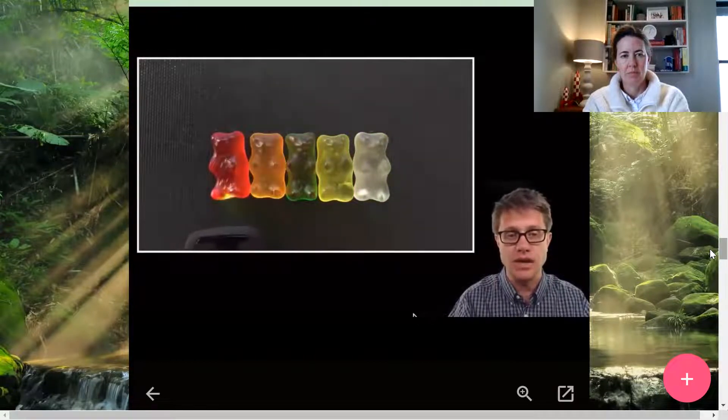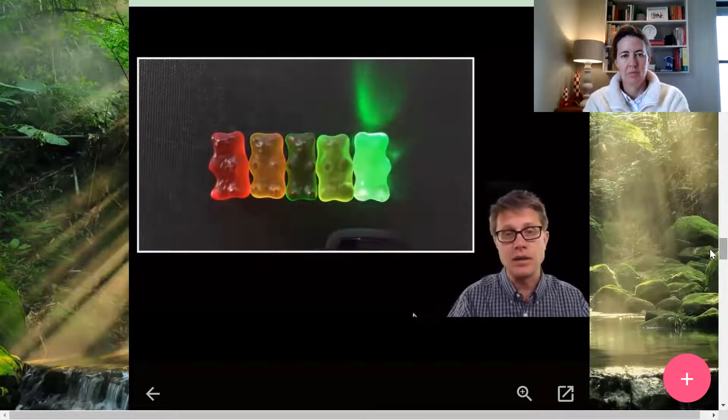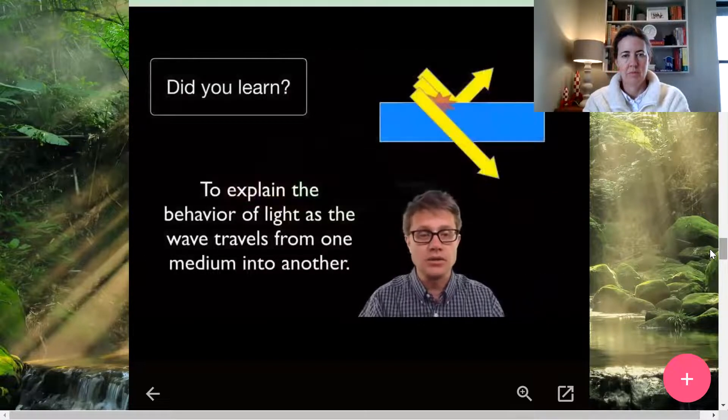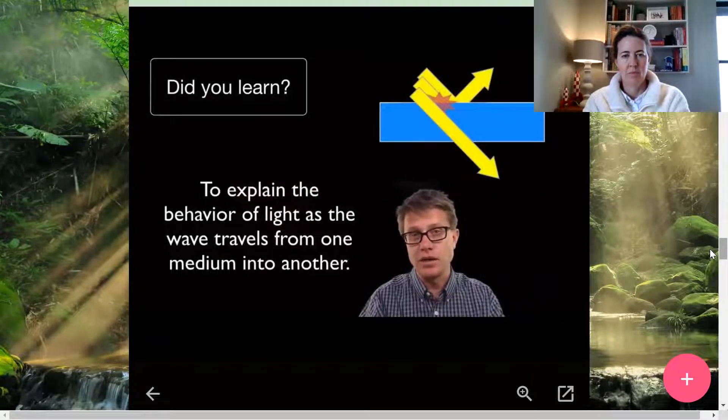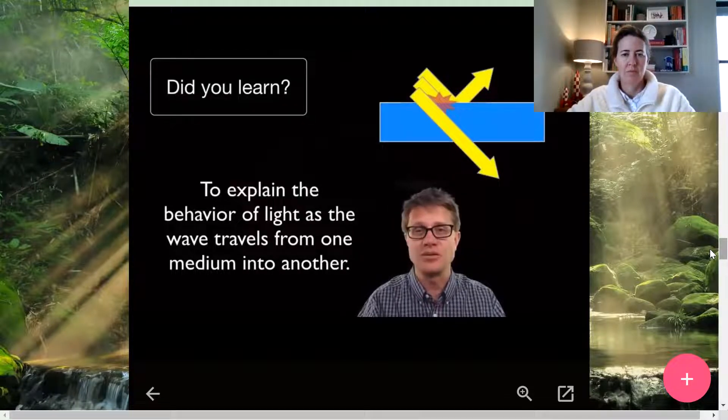And so if we continue the video and watch what happens, you can see each of those gummy bears are transmitting, absorbing a different amount. But when we get to the red, we see a bunch of reflection, a bunch of absorption, but not much transmission. And again, that's dependent upon the pigments and the chemicals that we have inside the gummy bears itself. And so did you learn to explain the behavior of light as it travels from one medium to another? Again, it can be reflected, it could be absorbed or transmitted. And I hope that was helpful.